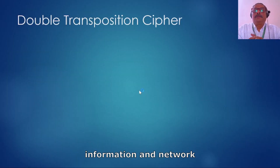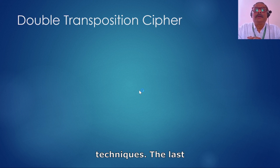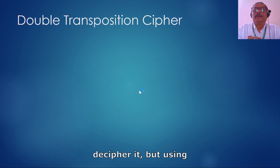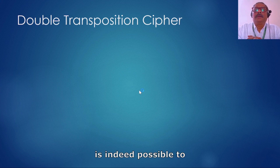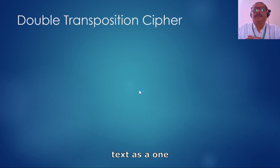Hi friends, welcome back to this session on information and network security. We are looking into the classical cipher techniques. Last session we saw the simple substitution cipher technique and found that logically it is almost impossible to decipher, but using human knowledge it is indeed possible to decipher easily. So to make it more complicated we look at another technique.